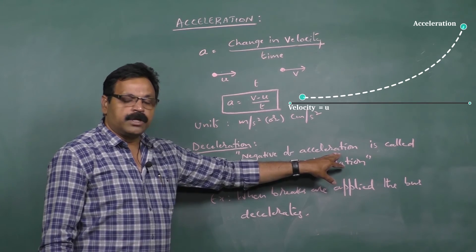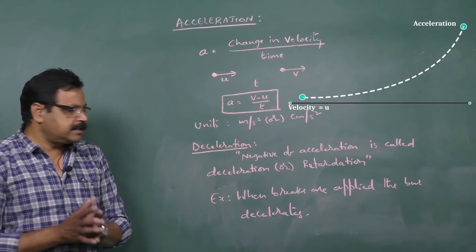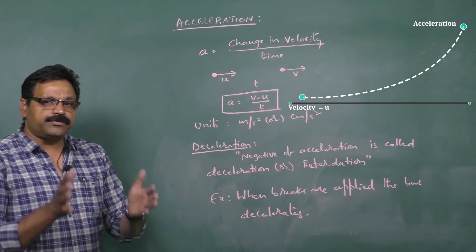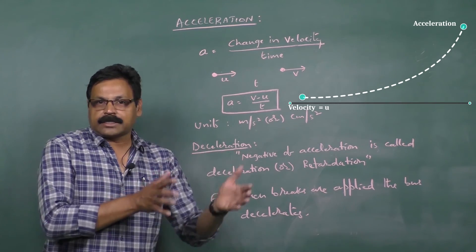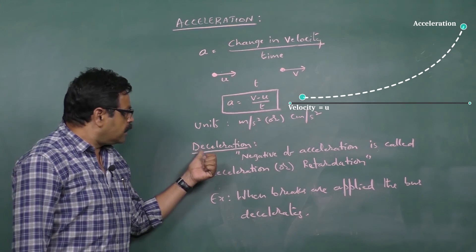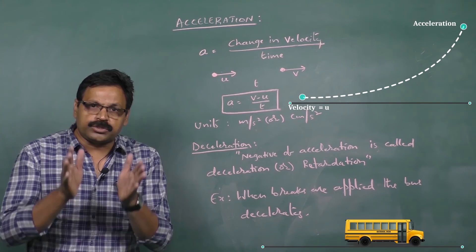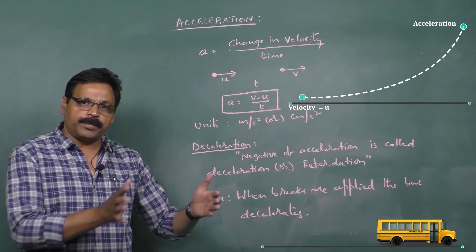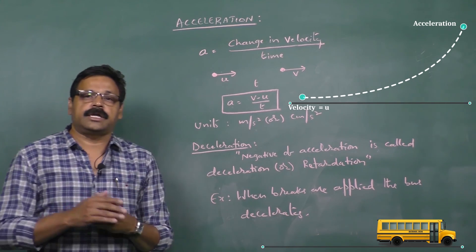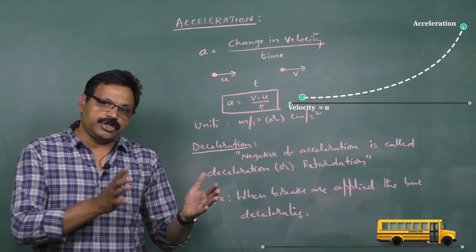When the final velocity is less than the initial velocity, the value of acceleration comes out negative. This negative acceleration is called deceleration, and another term for it is retardation. So deceleration equals minus a. As an example, when a bus is moving and you apply the brakes to stop it, the final velocity becomes zero — the bus is decelerating. These are the two concepts of acceleration and deceleration.